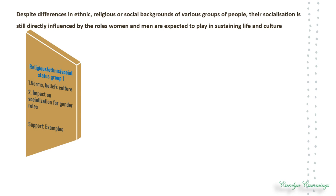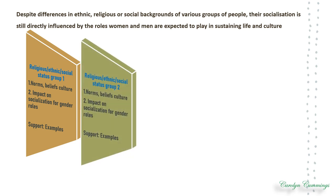In paragraph one of the body, we look at one religious group, one ethnic group, or a group of a certain social status. In this paragraph, you want to talk about the norms, beliefs, or cultures of that group and how this may impact the socialization strategies for gender roles — and of course, you provide support. Then in paragraph two, we do something similar: we introduce another group, whether religious, ethnic, or of a certain socioeconomic status, and talk about their beliefs and norms and how these impact socialization for gender roles.